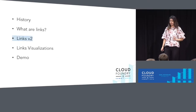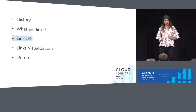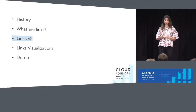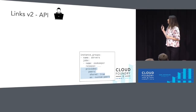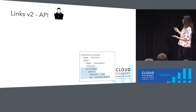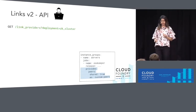Now that we have a basic understanding of why links were created and what they are, let's get into the latest features we have developed around links. The first of which is the links API. If you have a deployment with a provider being provided, the links API provides a way to get all the entities that are being provided in a deployment.